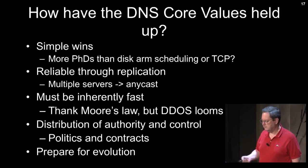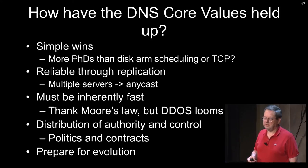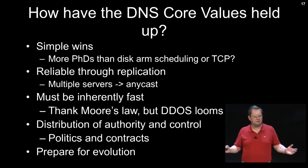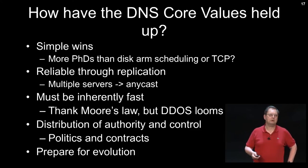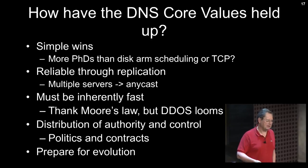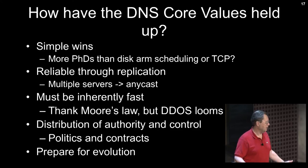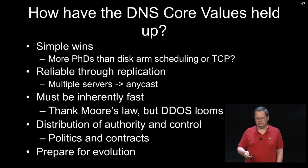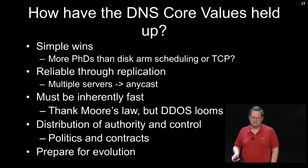Can we keep up? Can we still use the core values that got us here? Simple wins — I'm amazed at how much analysis people do on DNS traffic and the complicated systems used. Can we keep a simple implementation structure? Reliability through replication is still a winner, though we're drifting towards anycast infrastructures that move the problem to the routing area and tend to force centralization. Must be inherently fast — we can thank Moore's law, but that also means DDoS attackers have bigger weapons. We used to have open servers; now you can't because people will mount DDoS attacks through them.